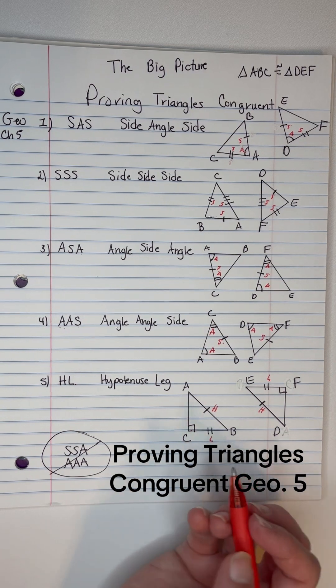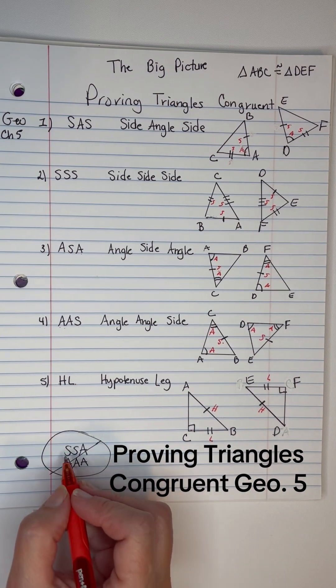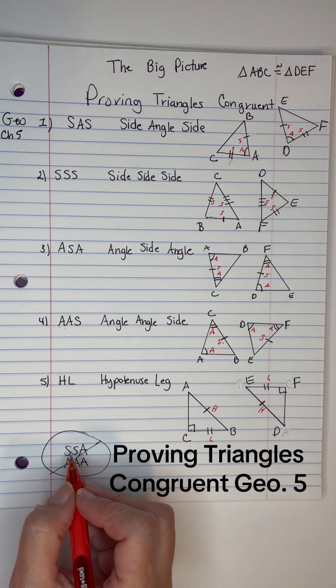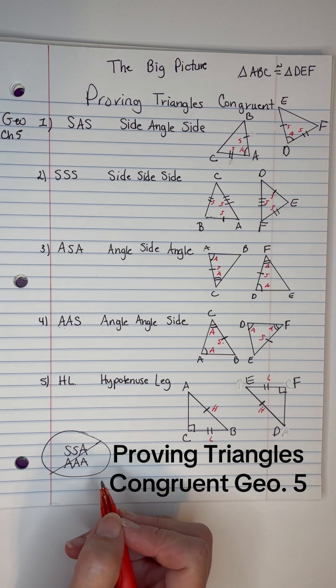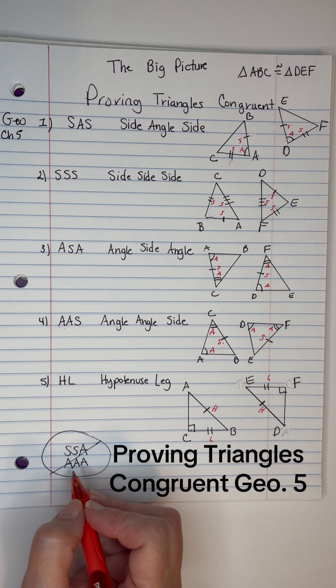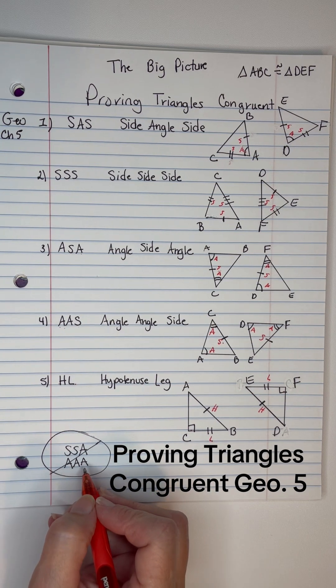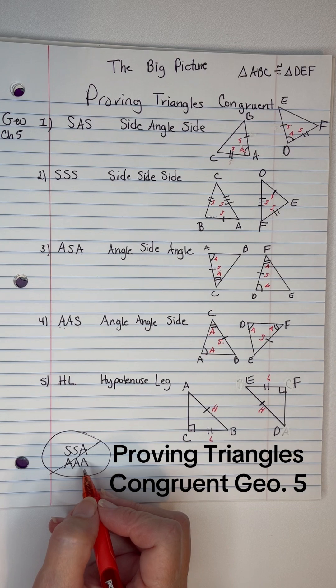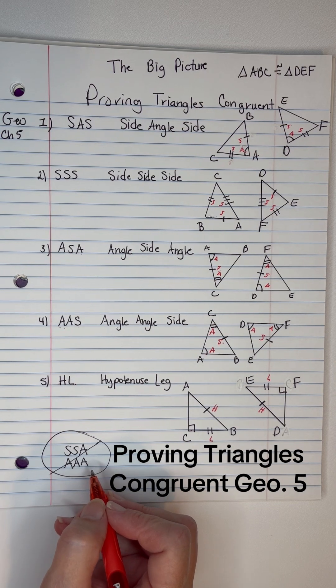I do want you to keep in mind that you're not going to have one that's side-side-angle or angle-side-side, and when I get to that section, I will explain that in detail as to why that won't work, and you're never going to have angle-angle-angle because that just proves similarity, but not congruence.